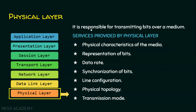The physical layer is responsible for transmitting bits over a medium. Whatever the data link layer creates is a frame — a set of zeros and ones packed with a header and a trailer. These bits are given to the physical layer for transmission over a medium, which can be wired or wireless. Whatever the physical layer receives from the data link layer as bits must be converted into signals and transmitted over a medium.